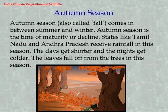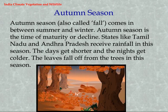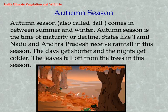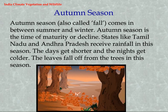Autumn Season. Autumn season, also called fall, comes in between summer and winter. It is the time of maturity or decline. States like Tamil Nadu and Andhra Pradesh receive rainfall in this season. The days get shorter and the nights get colder, and the leaves fall off from the trees.